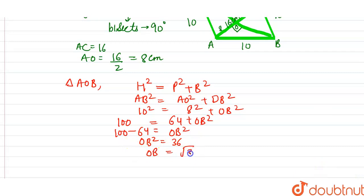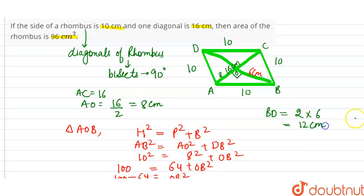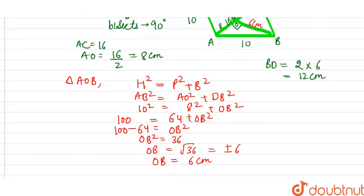So OB = √36 = ±6. Since the side cannot be negative, OB = 6 centimeters. Since OB = 6 centimeters, the full diagonal BD = 2 × 6 = 12 centimeters.